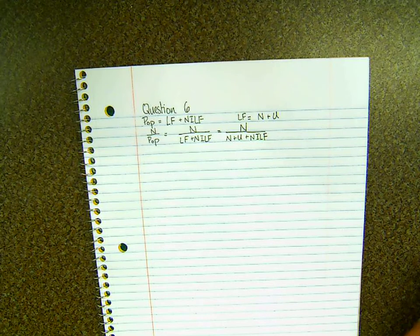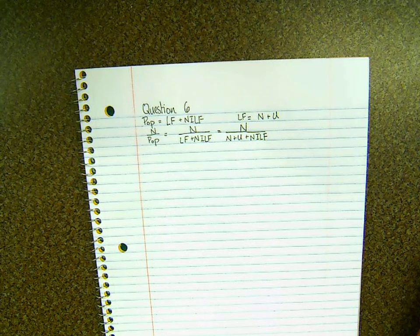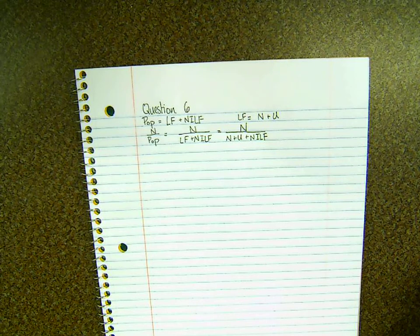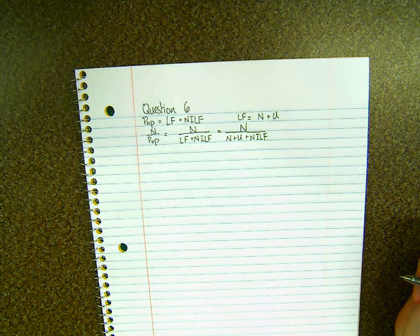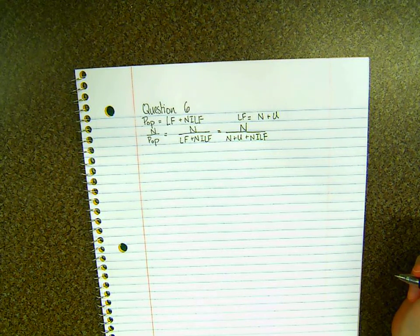Now the rest of the problem asks: find an analytical expression to represent how the employment-to-population ratio changes with an increase in the number of unemployed individuals. You may assume that the number of employed, unemployed, and those not in the labor force are independent from one another for ease of exposition.